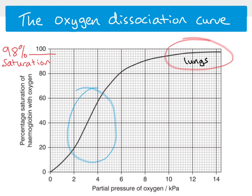Lower down the curve is what we see in the respiring tissues. The partial pressure of oxygen there varies depending on tissue type and activity level. Taking an example of 3 kilopascals, which is quite low, we see only 36% saturation of hemoglobin. So hemoglobin has a much lower affinity for oxygen in the respiring tissues, meaning that as blood moves from the lungs to those tissues, oxygen unloads — it unbinds from the hemoglobin and is released for use in aerobic respiration.